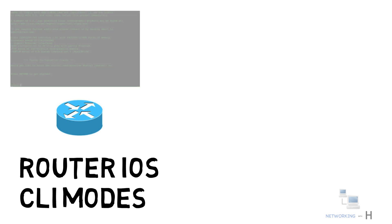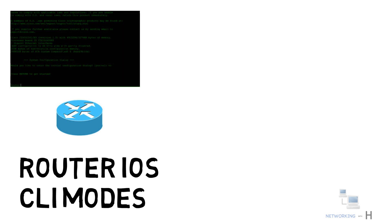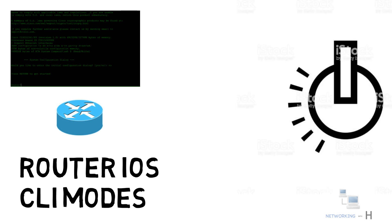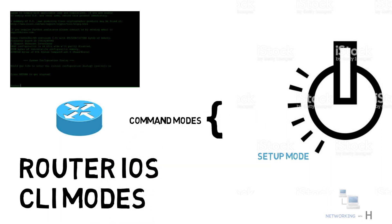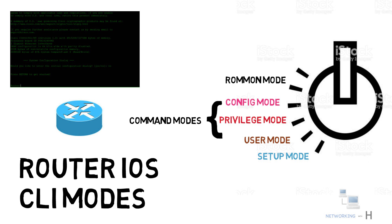Cisco has divided its CLI into several different modes. Understanding Cisco CLI modes is essential as each of these modes serves a different purpose and has its own set of commands. The CLI modes are as follows: the first one is the setup mode, the second one is command mode which includes user mode, privilege mode, and configuration mode, and the last one is the ROMMON mode.